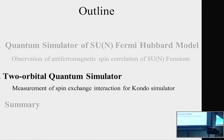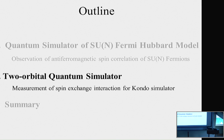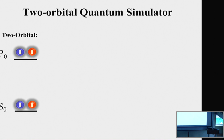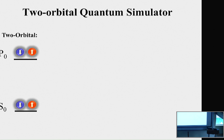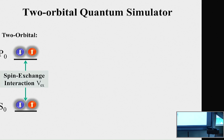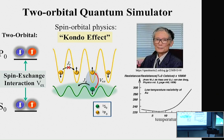For the rest of my talk, I switch to the second topic of the two-orbital quantum simulator. Another unique feature of two-electron atoms is the existence of two stable electronic orbitals: the ground-state singlet S0 and the metastable triplet P0. There is a spin-exchange interaction between atoms in these electronic states, making this system attractive for studying spin-orbital physics such as the Kondo effect.